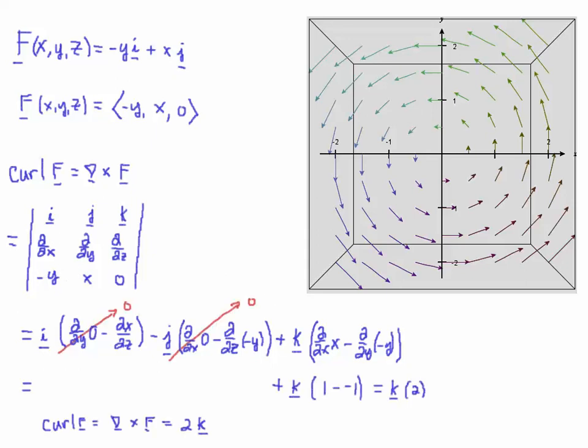Now the only thing that's going to survive here is the k component. Because the derivative of 0 is 0, the partial of x with respect to z is of course 0, the derivative of 0 is 0, and the partial of -y with respect to z is still going to be 0. So these two terms vanish. So the only thing that survives here is ∂x/∂x, which is 1, minus, and then ∂(-y)/∂y is -1. So 1 minus -1 is 1 + 1, and that gives us 2. And that's in the k component. So the curl of F is equal to grad cross F, and that gives us 2k.